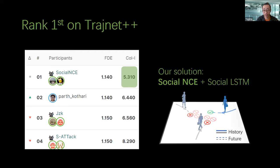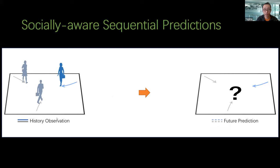So our method currently ranks the first place on the TrashNet++ benchmark. The key idea of our solution is Social NCE, a learning method we developed recently applied on top of social LSTM model. So it actually achieved the lowest collision rates as well as the best predicting accuracy. So our method is not specific to human motion forecasting. It can actually be applied to many sequential prediction problems in the multi-agent context. So I will firstly describe the key idea and then talk about how it can be applied in the motion forecasting problem.